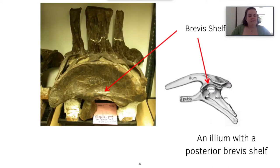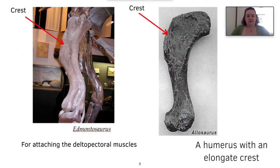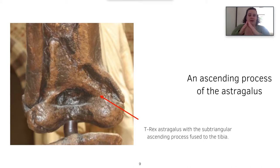Another feature is an ileum with a posterior brevis shelf. The brevis shelf is an area where muscles attach, and this is where the tail would have attached in dinosaurs. Another is a femur with a curved shaft, as you can see quite nicely here when compared to a human femur. Another is a humerus with an elongate crest, used for attaching the deltopectoral muscles. And an ascending process of the astragalus — the astragalus in paleontological terms is the ankle bone — which makes a sub-triangular shape and is fused to the tibia.